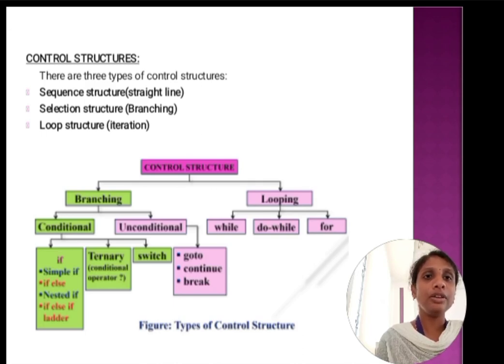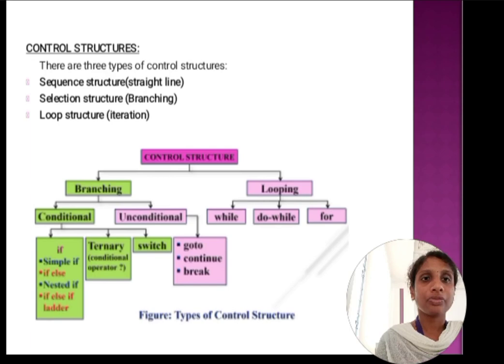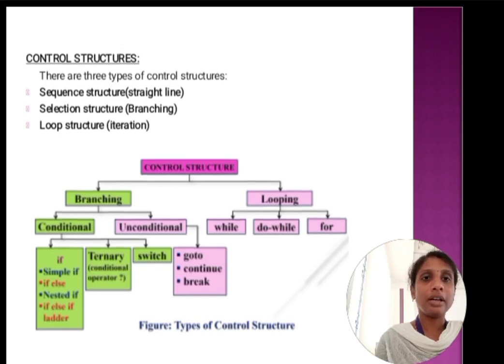Conditional branching statements are divided into simple if statement, if-else statement, nested if, if-else ladder, and the ternary operators, and switch case. These are the types of conditional control structures. It works based on the given condition. If the condition is true, it goes into the if block. Otherwise, it goes into the else block, which means the false block.